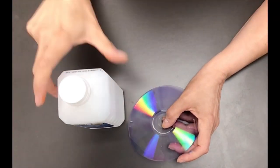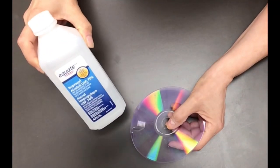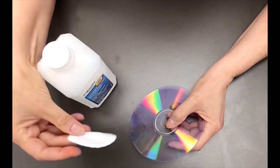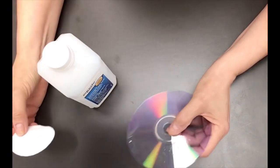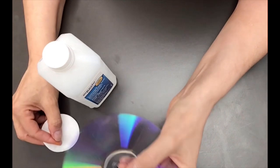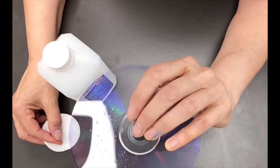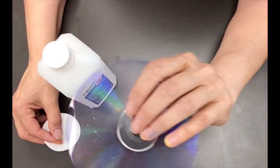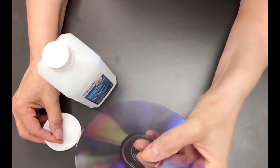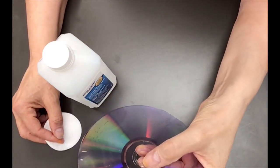The first thing we're going to do is take our rubbing alcohol on a cotton swab and we're going to clean the disc. This is to ensure there's no fingerprints or grease marks on it and this will help the paint stick better to the disc.